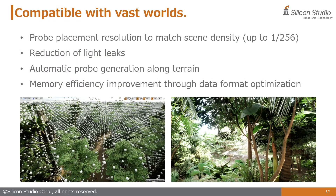There have also been improvements to probe placement. The ability to set coarser resolutions than before has reduced light leaks that often occurred around thin walls. Additionally, a feature has been added to automatically place probes along the input terrain data, significantly reducing maintenance costs related to probes. Furthermore, we have re-examined Enlighten's pre-computed data, successfully reducing the probe runtime memory by half. Optimizations have been made to match modern types of games, allowing Enlighten to operate efficiently in AAA level games.